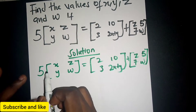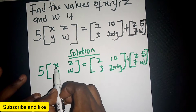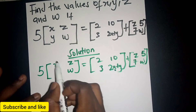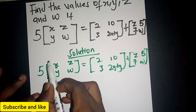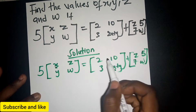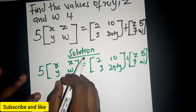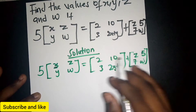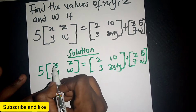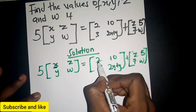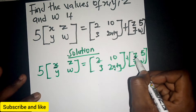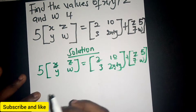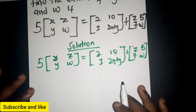If you look here, we have x in one position, and x also appears on the other side. To find the value of x, we compare values at the same position. This is a 2x2 matrix. So if x is here, we compare it to the value at that same position on the other side — x equals 2, and z equals 10 plus 5. That's how we compare values to find each variable.